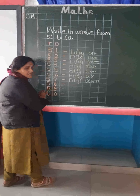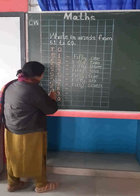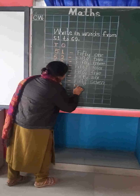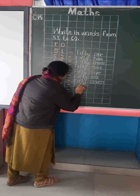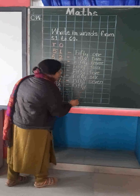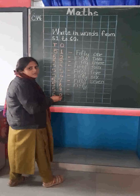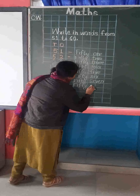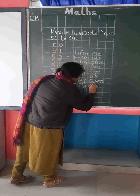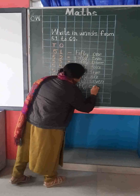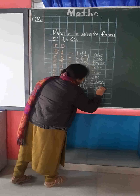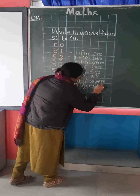Now we will write here 58. F, I, F, T, Y. 50. And we already know the spelling of 8. So we will write here the spelling of 8: E, I, G, H, T. 58.